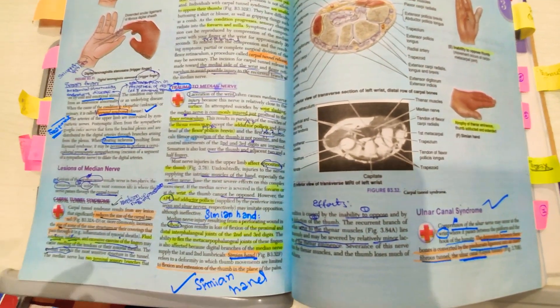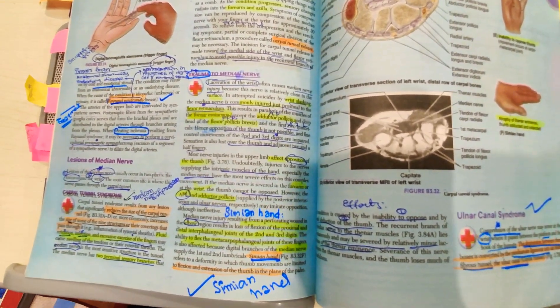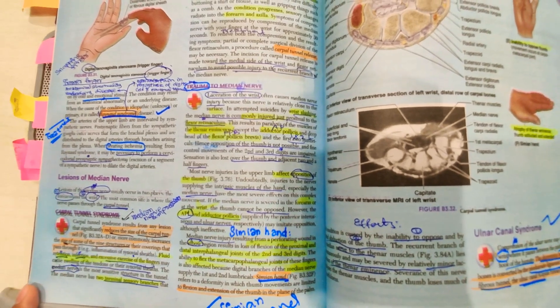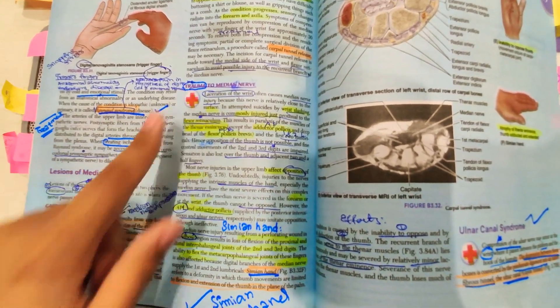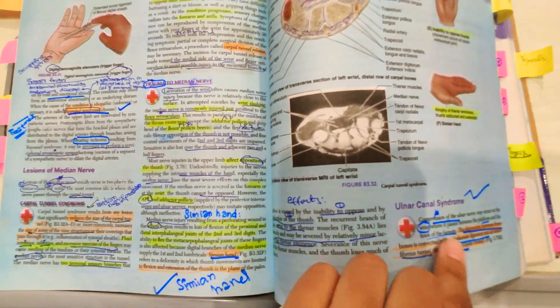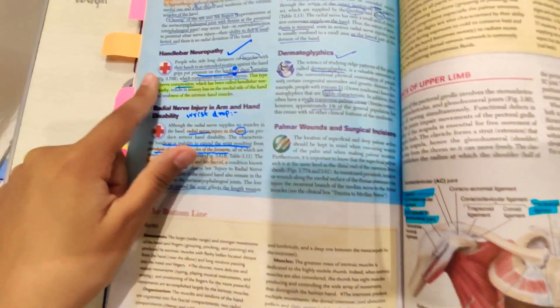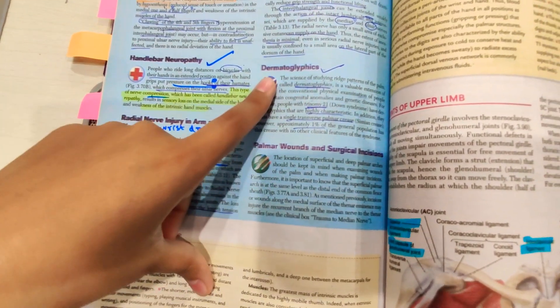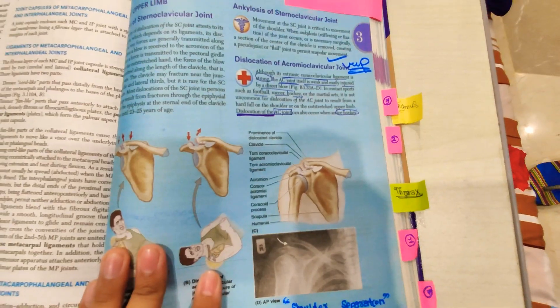Ischemia - you know about Raynaud syndrome, it's important. I'm guiding you about all that are important, must do these clinicals. Then trauma of median nerve, then simian hand and ulnar canal syndrome and handlebar neuropathy, wrist drop, dermatoglyphics.